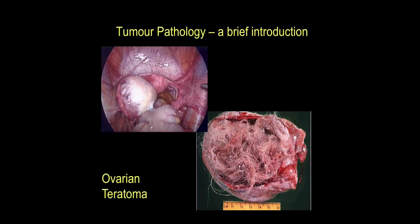We should also think about other cell lineages and types of histogenesis — in particular, germ cell tumors. A nice well-known example is the ovarian teratoma, derived from the ovary. Looking with a laparoscope down into the pelvis, we can see the sigmoid colon, the rectum, the uterus, the fallopian tube, and on the left-hand side a greatly enlarged ovary — clearly something is going on. This tumor cell type is derived from germ cells.